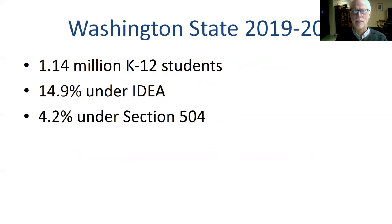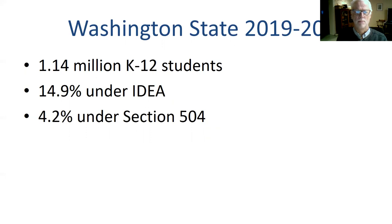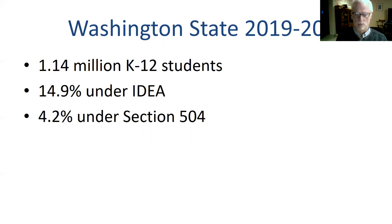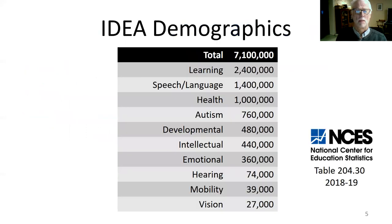To give you an idea, I have data for Washington State. There are about 1.14 million students in K through 12 public education in Washington State, and about almost 15% are under IDEA, and actually 4.2% are under Section 504. So we're approaching 20% — 19.1%.